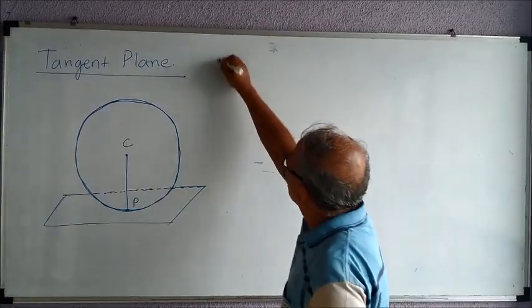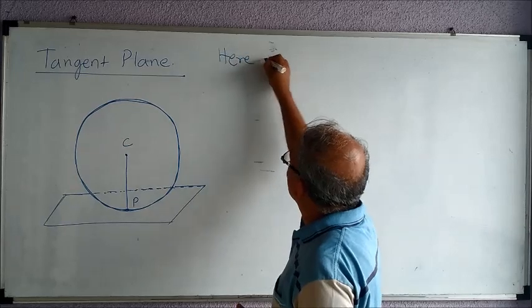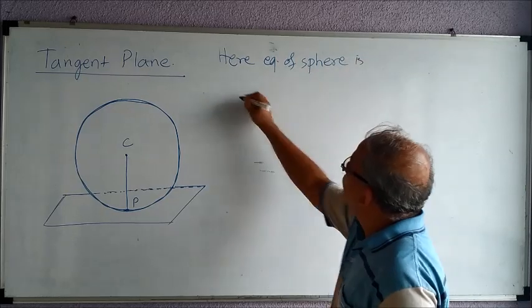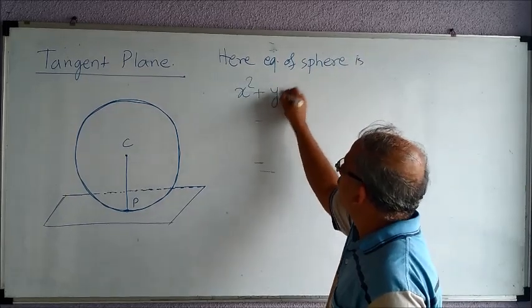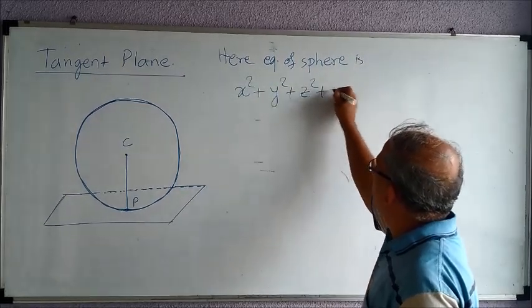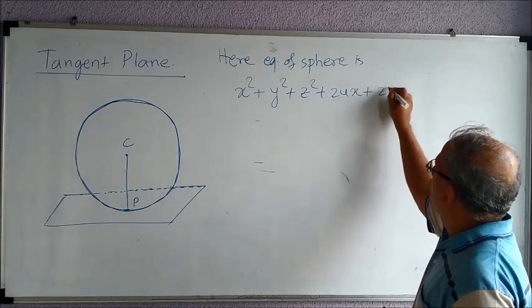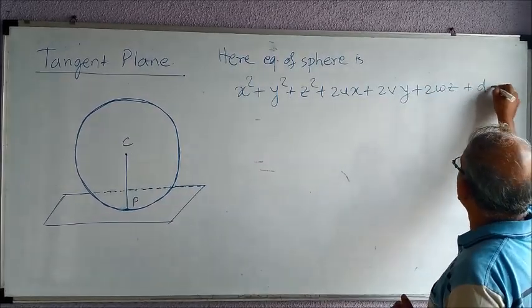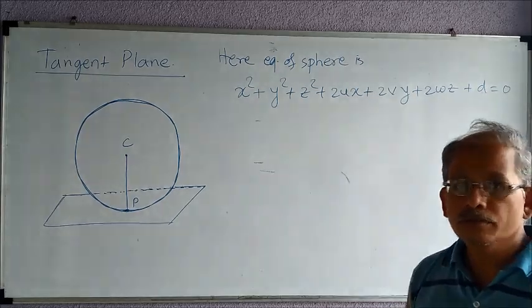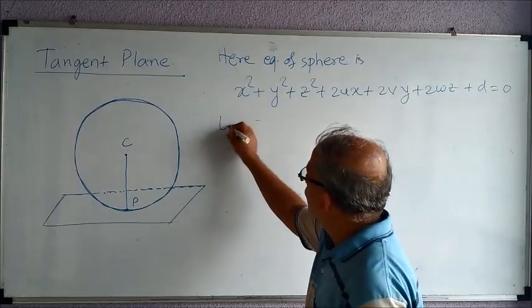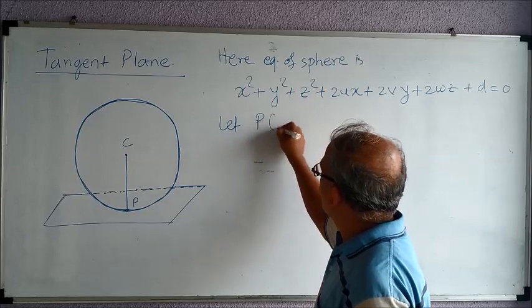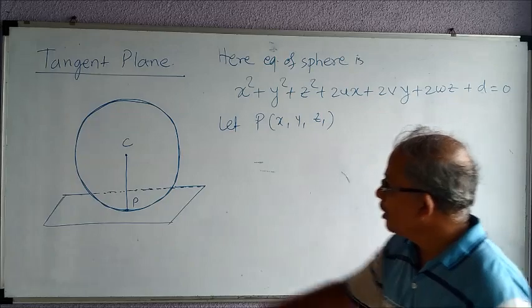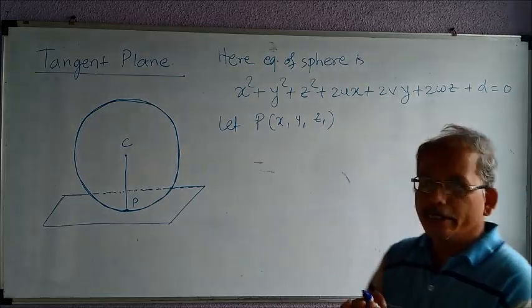So here equation of sphere is x² + y² + z² + 2ux + 2vy + 2wz + d = 0. So this is the standard equation. Then let P(x₁, y₁, z₁). So these are the coordinates of point P, that is the point of contact.